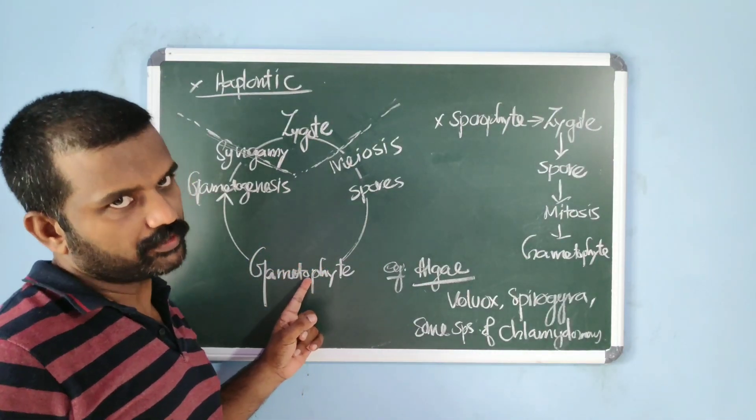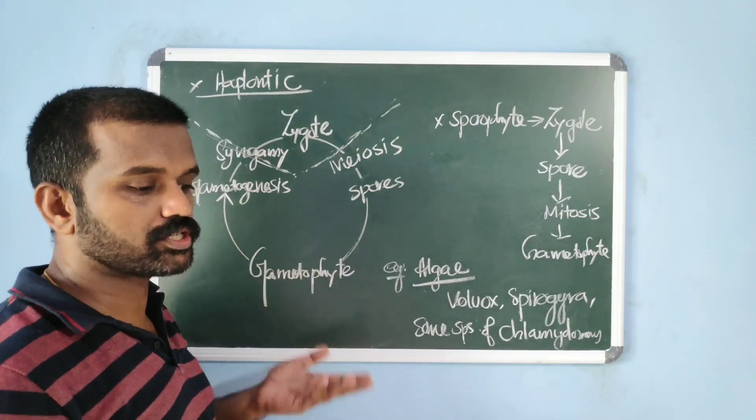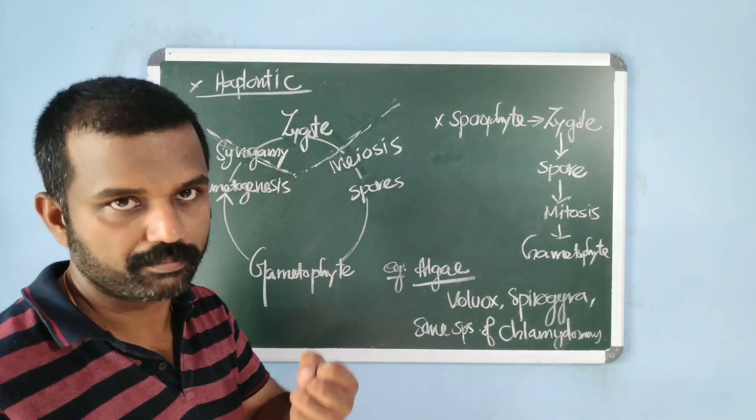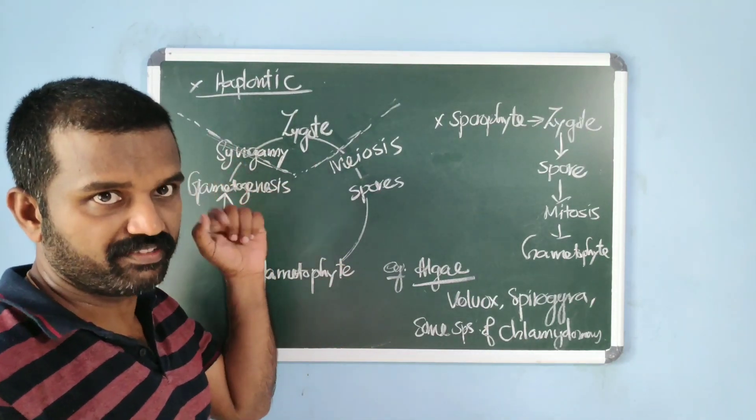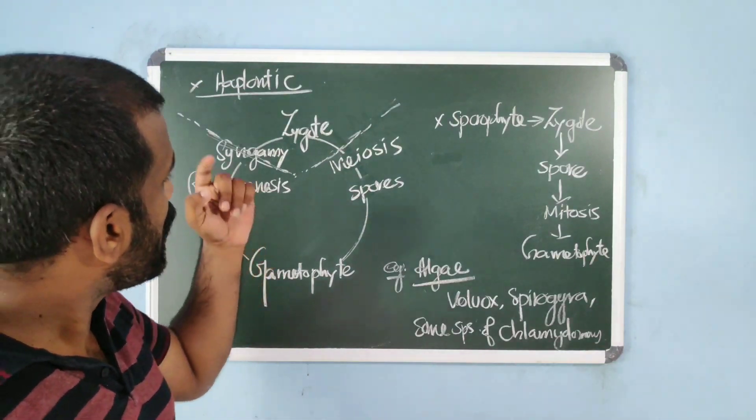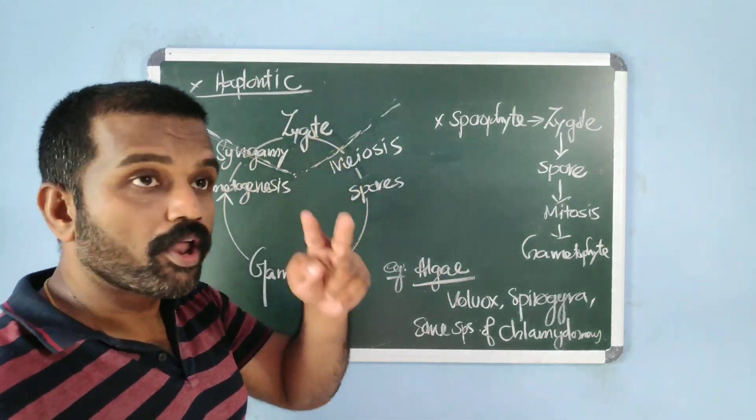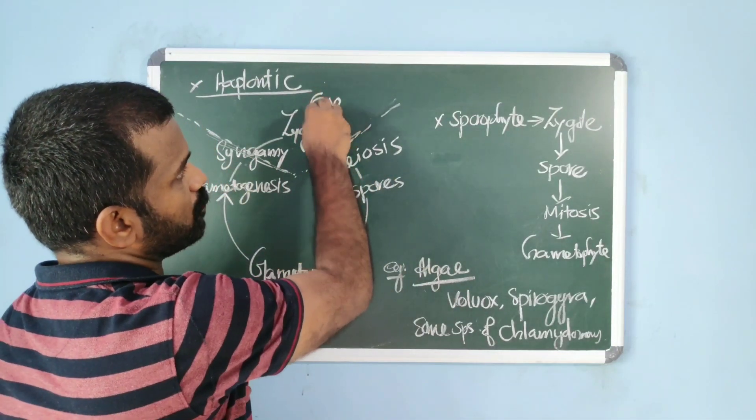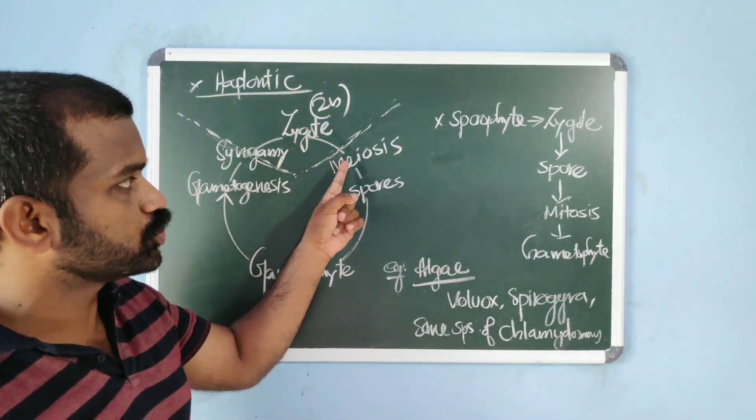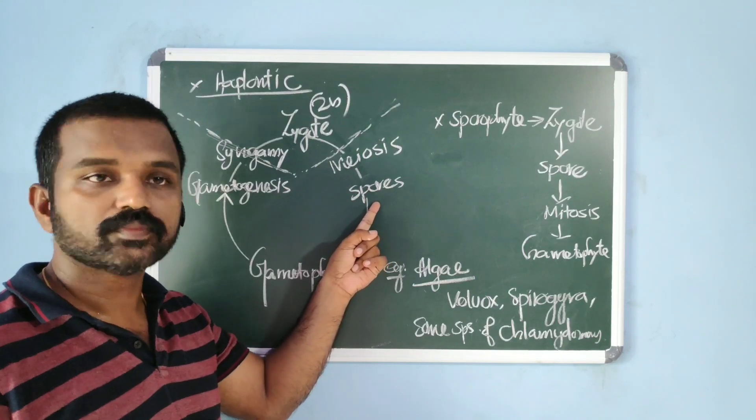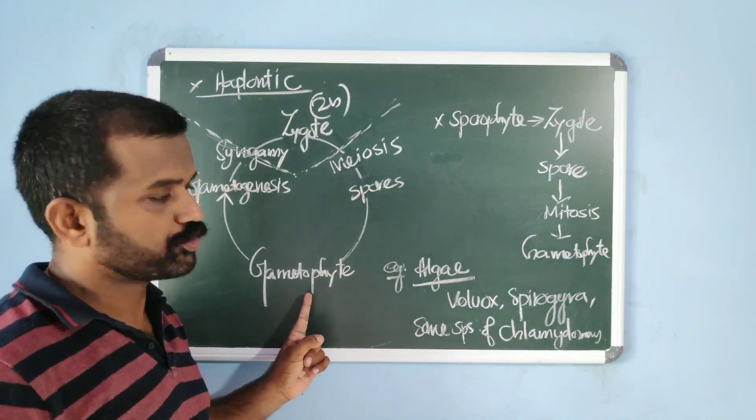Gametogenesis is the process of formation of gametes. It produces gametes. Gametes fuse, that is fertilization. After fertilization, a diploid zygote forms. Zygote undergoes meiosis to form spore. Spore germinates to form gametophyte.